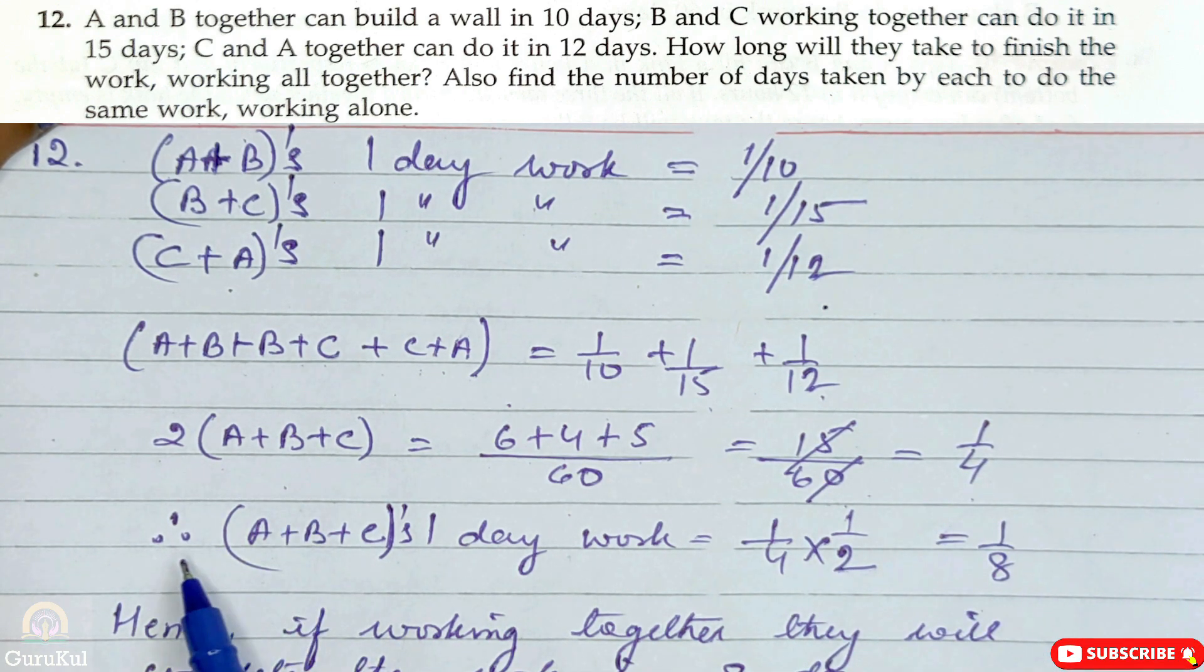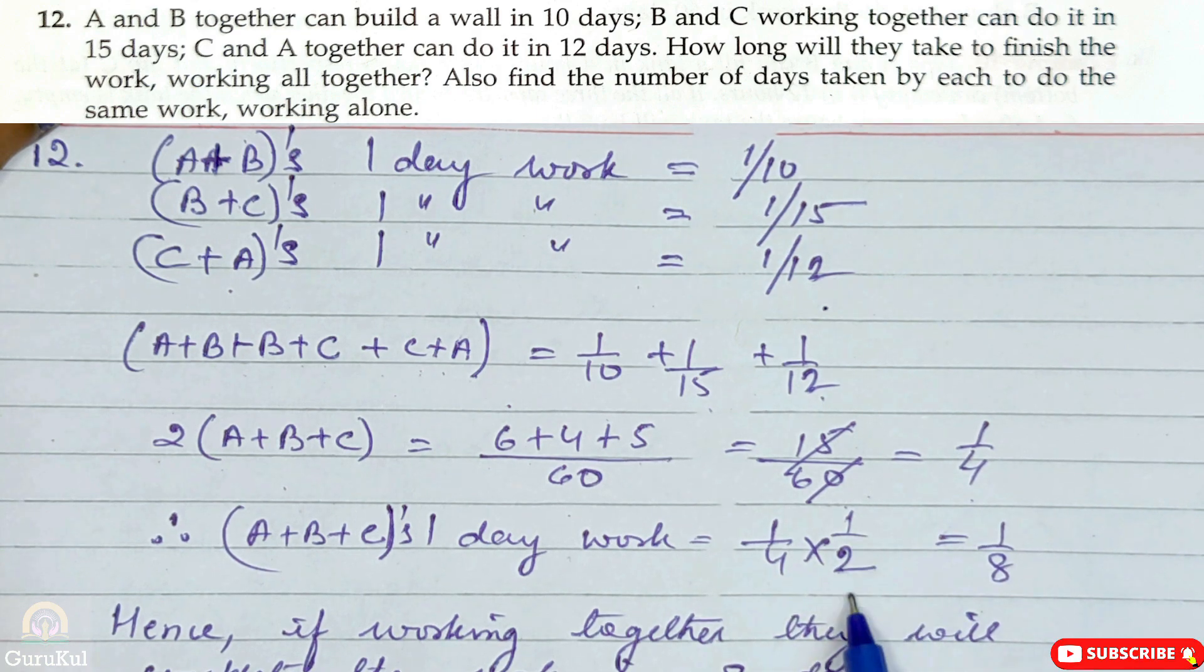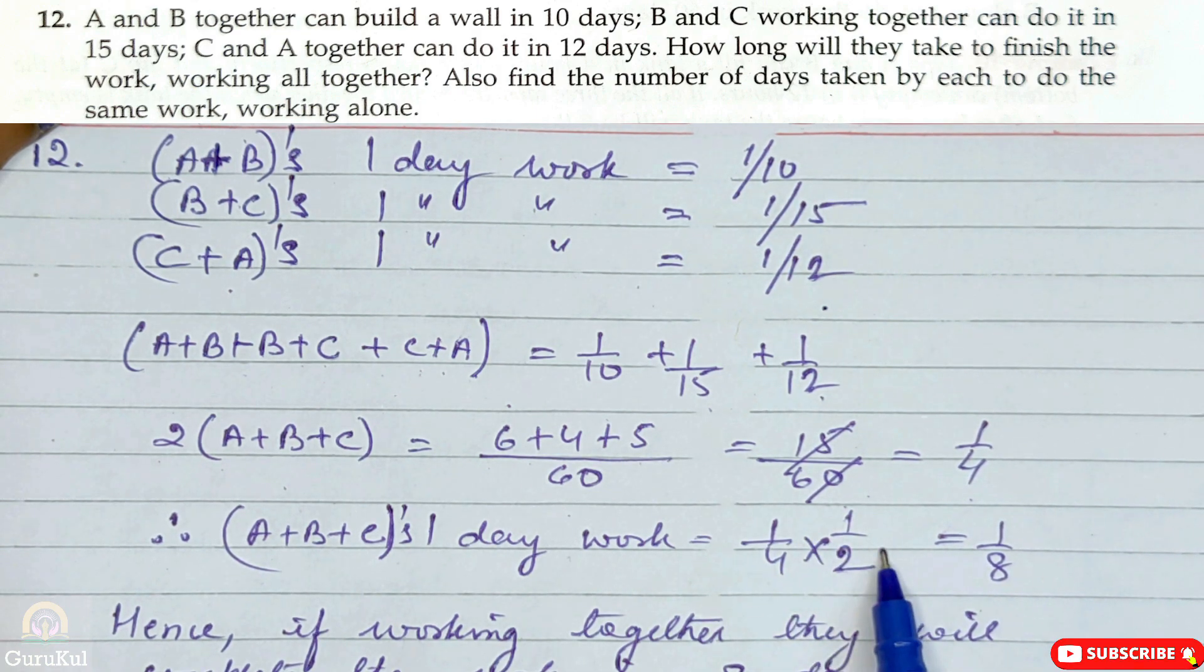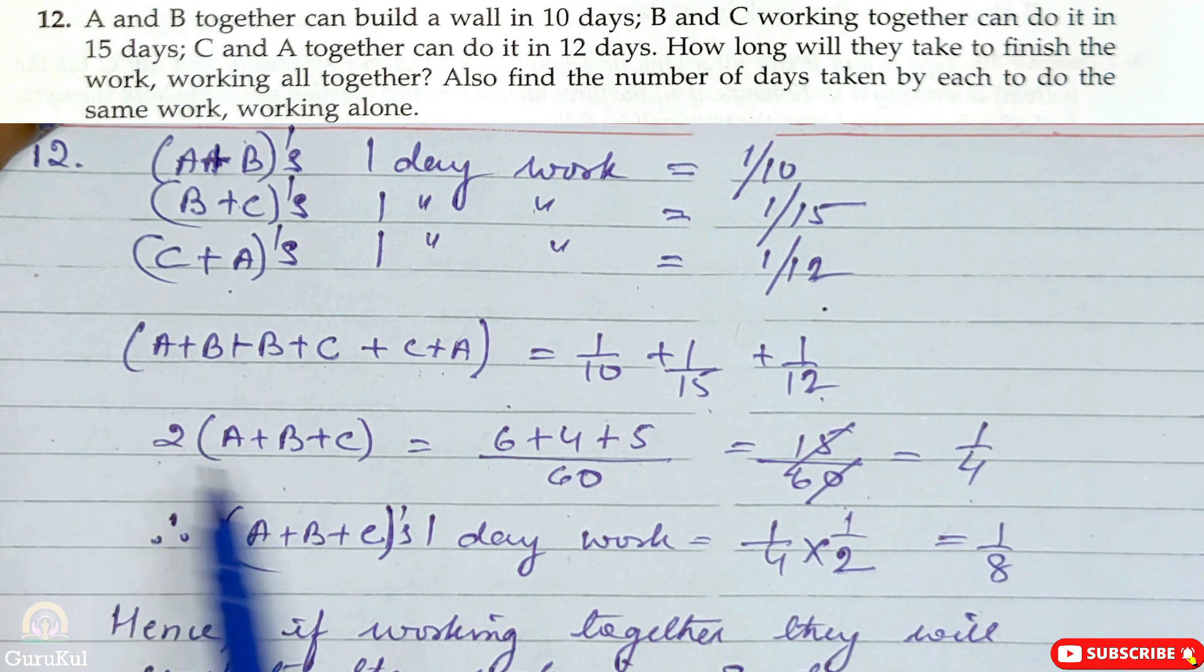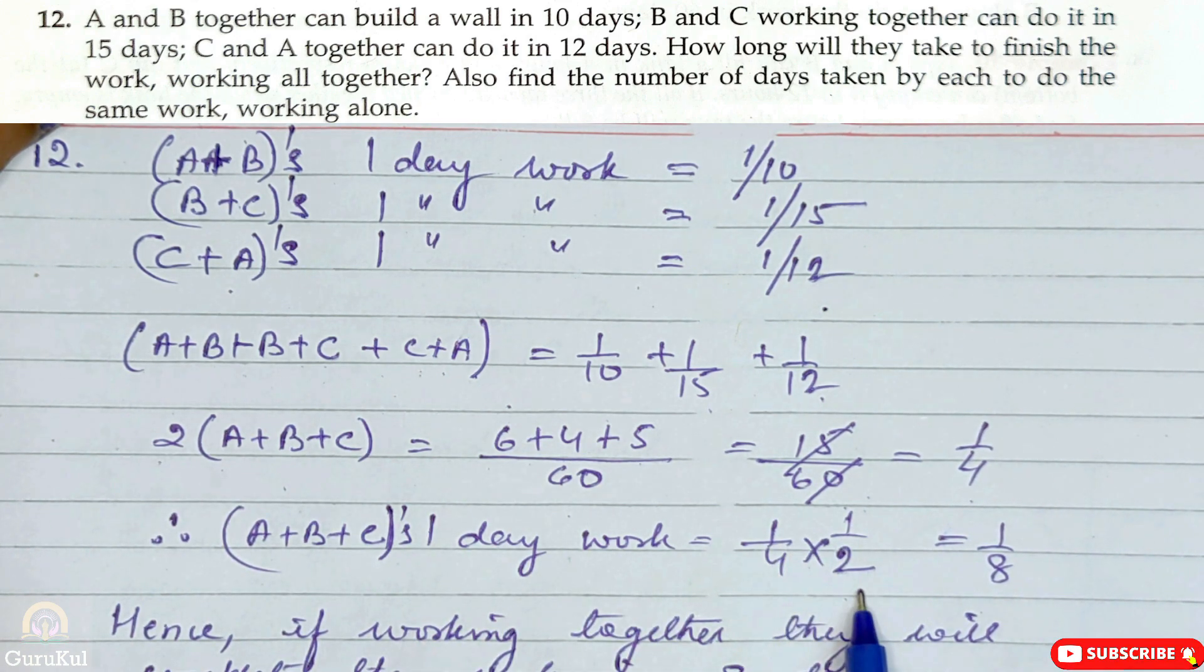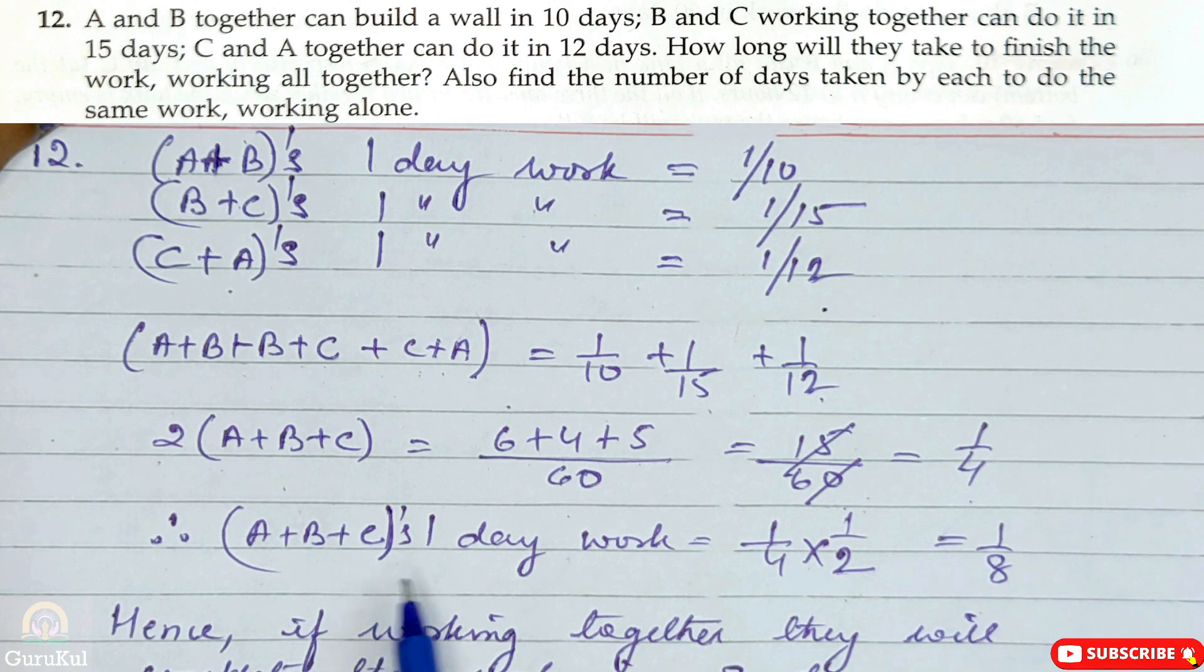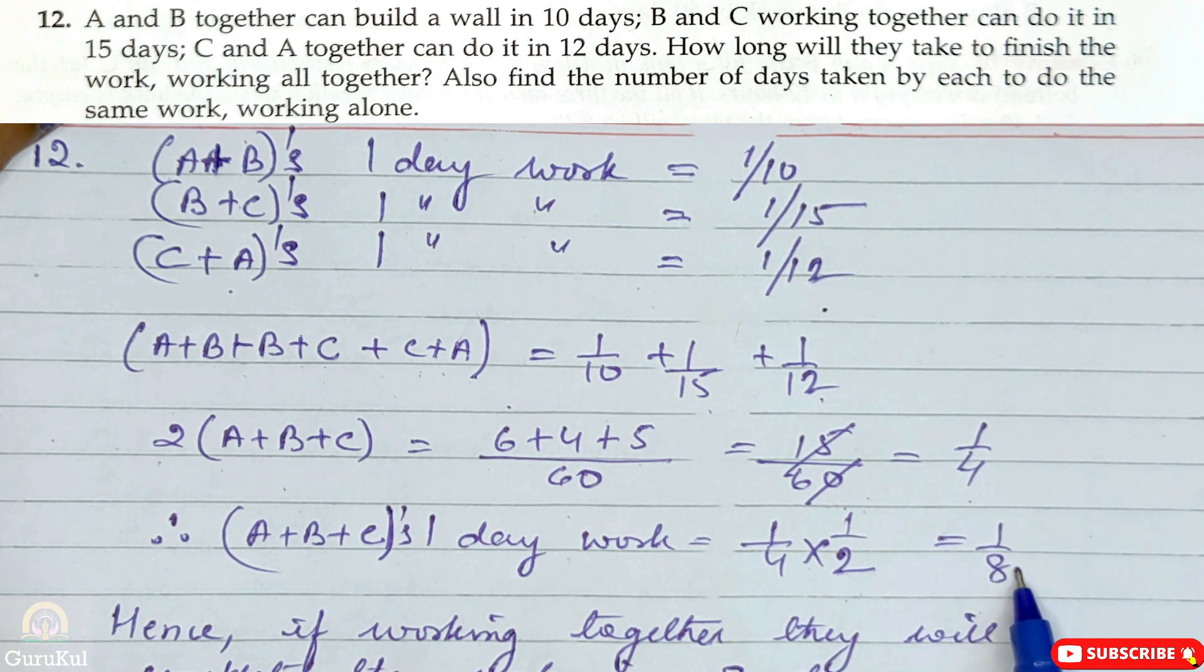In the bracket you can see 2A, 2B and 2C. So we'll take 2 common. So 2 times A plus B plus C. LCM is 60, so 6 plus 4 plus 5 which gives us 15 by 60, which reduces to 1 by 4. Therefore, A plus B plus C's one day work is equal to 1 by 4 into 1 by 2, which gives us 1 by 8.